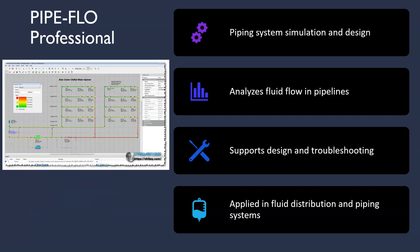Last but not least is PIPE. This is a type of software especially designed for piping system simulation and design. This powerful tool allows chemical engineers to analyze fluid flow in pipelines, optimize systems and ensure efficient operation throughout the entire piping network.